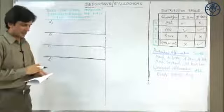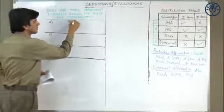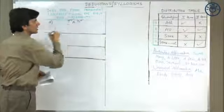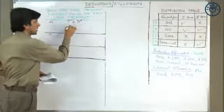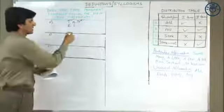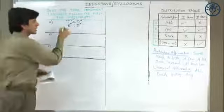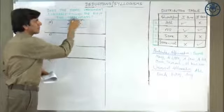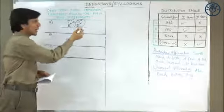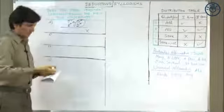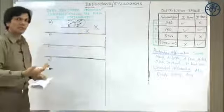Let's take a look at another question. The first part reads all tsunamis are disasters — distributed, not distributed. Second part: some earthquakes are disasters — both not distributed. The middle term D is not distributed in either premise, so there should be no conclusion at all. Whatever conclusion is drawn in the question is definitely invalid.